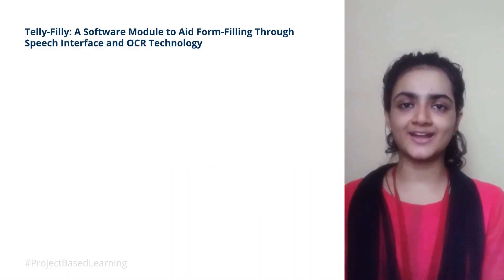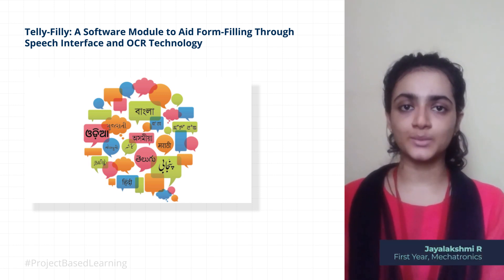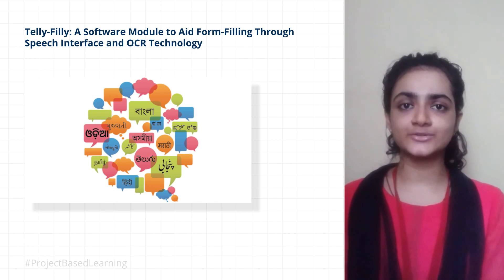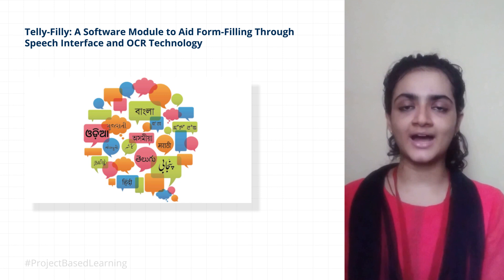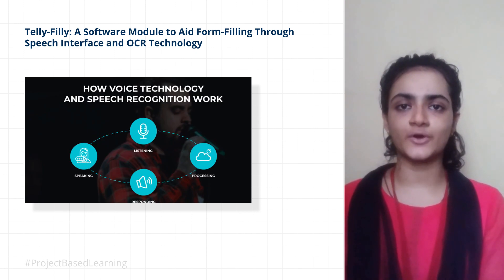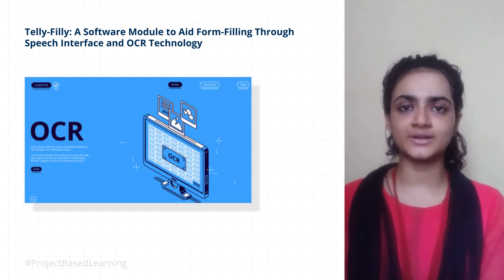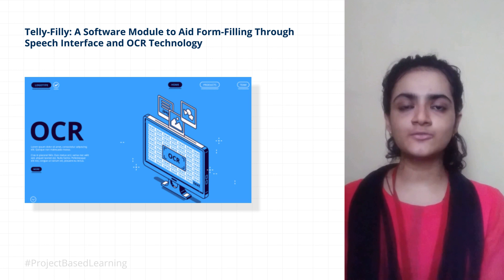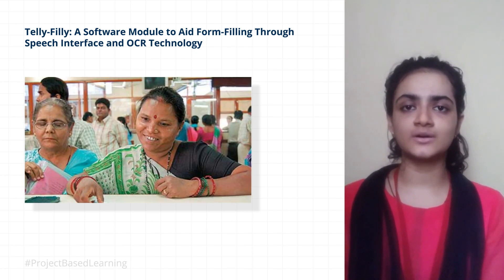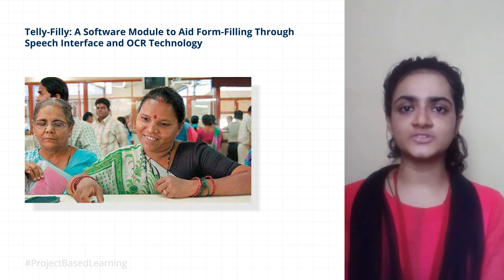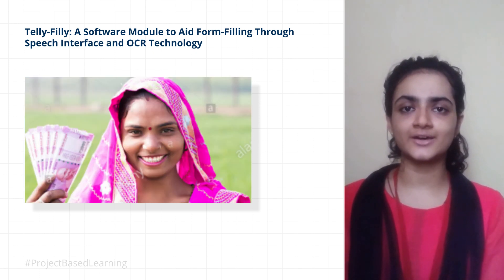The use of text-block translation helps users provide speech inputs in the language they are comfortable with. Thus, the speech interface along with the translator provides a user-friendly environment. Modules providing the highest levels of accuracy were chosen for each process involved. The OCR technology helps avoid spelling mistakes and errors due to varied pronunciations, reducing the amount of data that otherwise had to be fed orally. The software aims at reducing the user's dependency on other people, allowing them considerable control over their data, therefore enhancing the security of money and other sensitive information.